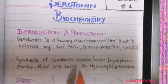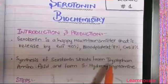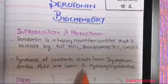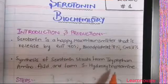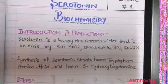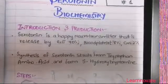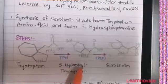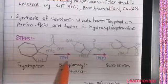The synthesis of serotonin starts from the tryptophan amino acid and it ultimately forms serotonin, that is 5-hydroxytryptamine. Here you can see the structure of tryptophan amino acid, which is converted into 5-hydroxytryptophan first by hydroxylation via the tryptophan hydroxylase enzyme.